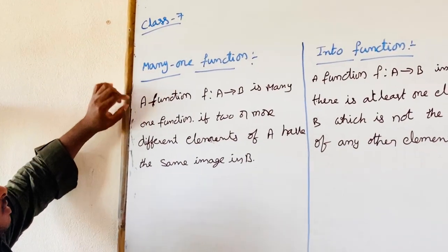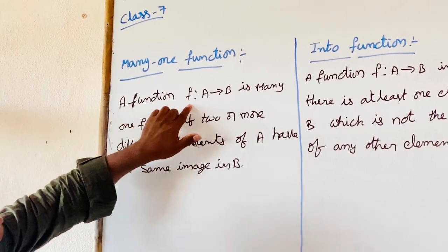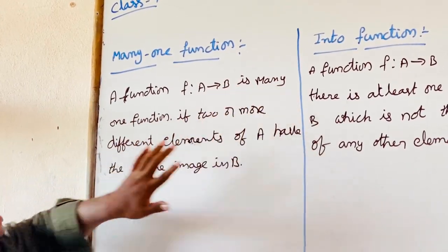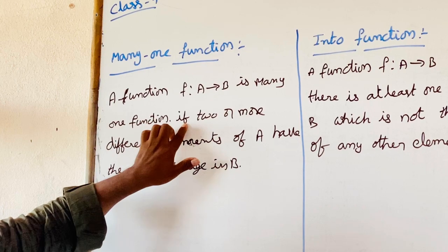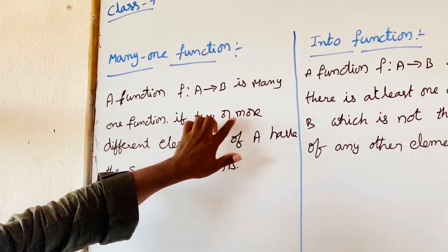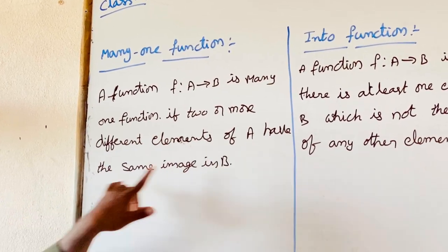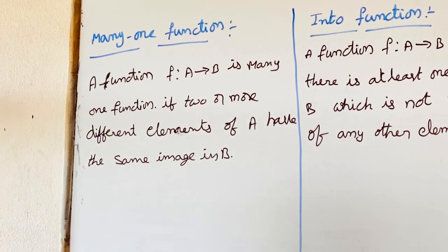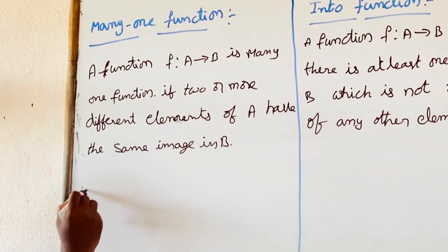So, what is many-one function? A function f mapping A to B is a many-one function if two or more different elements of A have the same image in B. Let us see an example.